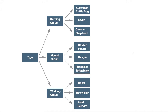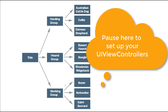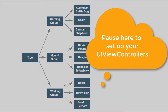Lay out your UI view controllers so that the three dogs that go with the herding group are just to the right of the herding group, the three dogs that go with the hound group are to the right, and the three dogs that go with the working group — the Boxer, the Rottweiler, and the St. Bernard — are to the right of the working group UI view controller. Do not create the segues yet. We will create our navigation controller to first handle those segues before we create them.